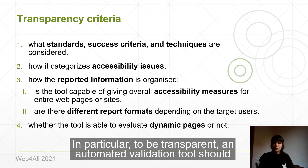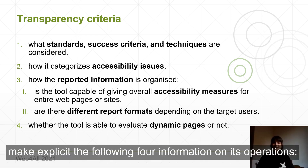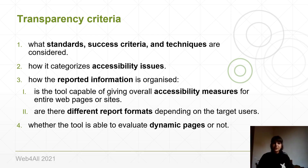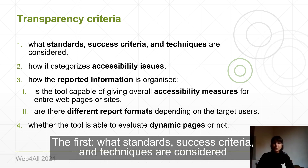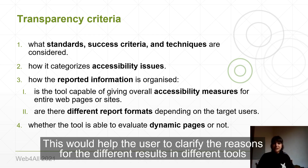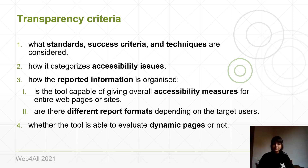In particular, to be transparent, an automated validation tool should make explicit the following four pieces of information on its operation. The first is what standards, success criteria, and techniques are considered. This would help the user clarify the reasons for the different results across different tools.